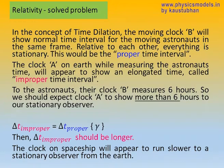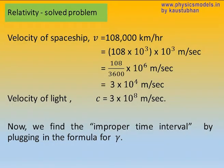Now plug in the equation delta T improper is equal to delta T proper into the ratio gamma. The velocity of the spaceship needs to be converted into the same unit as for the velocity of light. So we convert 108,000 kilometers per hour into meters per second. The calculation is shown here. The velocity of light is, of course, 3 into 10 to the power 8 meters per second. Now we can proceed to calculate the improper time interval.